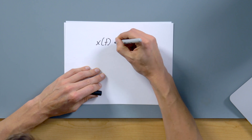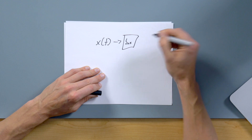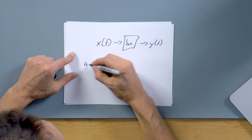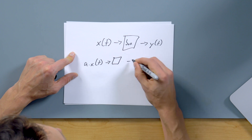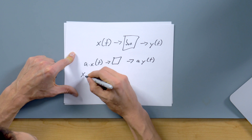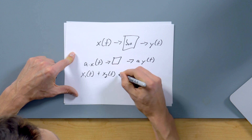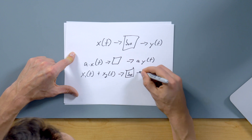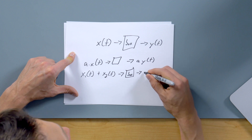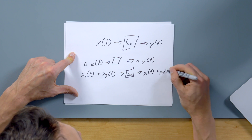An LTI system is basically where if you have x of t going into some sort of box and you get y of t out — because it doesn't matter if you're doing it right now, in 10 years, or five years ago — you can say a times x of t going into that same box comes out as a times y of t. And if you have x1 of t plus x2 of t going into this box, your output is going to be y1 of t plus y2 of t.